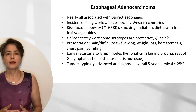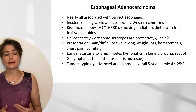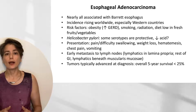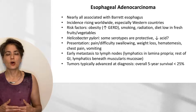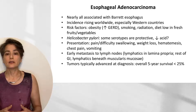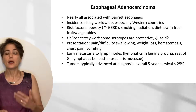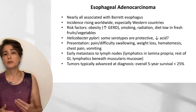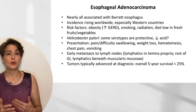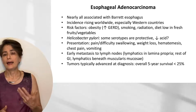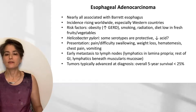Other presentations include hematemesis, chest pain, and vomiting. Because the lymphatics in the esophagus are found in the lamina propria, we tend to get early metastases to lymph nodes — unlike the rest of the GI tract where lymphatics are beneath the muscularis mucosa. Because of this early invasion, tumors are typically advanced at diagnosis with an overall five-year survival of less than 25%. This is why surveillance endoscopy on patients with Barrett esophagus is critical — to detect lesions early when intramucosal resection can save the patient's life.